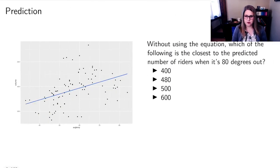So for this one, what I'd like you to do is, without using the equation, figure out which of these answers is closest to the number of riders when it's 80 degrees out. And we'll talk about that in synchronous class.